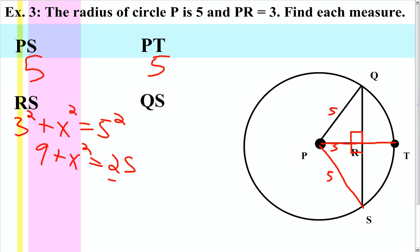In doing the Pythagorean theorem, we will see that the missing leg, which is the segment RS, is 4.